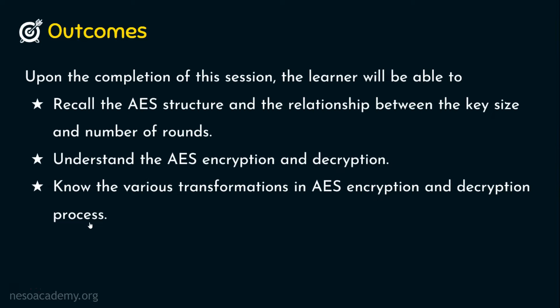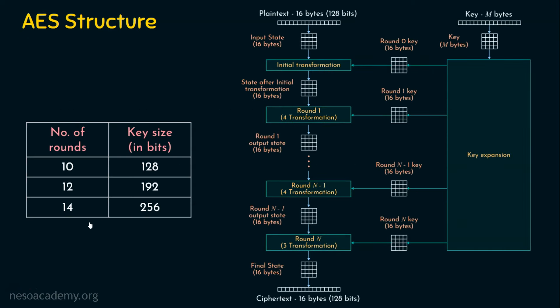Before understanding the AES encryption and decryption, let's quickly run through the AES structure from the last presentation. The input plaintext, which is 128 bits, is stored in the input state array of 16 bytes — 16 bytes means 128 bits. This 128-bit input is stored in the input state array, then given to the initial transformation, which requires a round key — the round zero key. If you understand this, it will be easy to correlate with the next diagram.